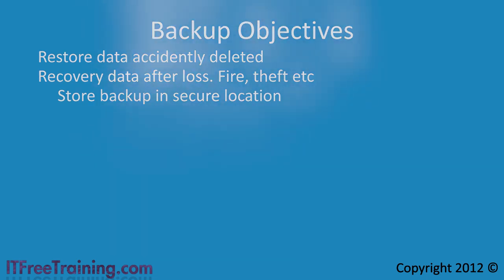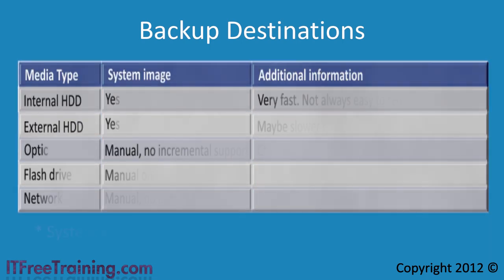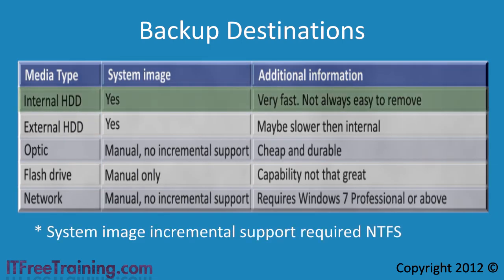The first backup media supported by Backup and Restore is a second internal hard disk. Backing up to an internal hard disk is the fastest option available. The problem is that internal hard disks are not always easy and quick to remove, so they are not good candidates for regular off-site storage. Some computers have eSATA connections, which allow you to externally connect a hard disk to your computer — one way to use an internal hard disk but have the freedom to easily remove it to take it off site. An internal hard disk also gives you the ability to restore the system if the primary hard disk were to fail.